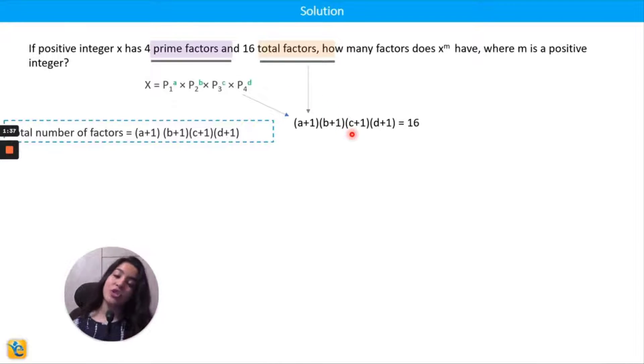So it's a product of four numbers which is 16. Now there are multiple ways of doing this - there is 2×2×2×2, or you could take three ones and a 16, you could take two ones and a two and an eight. So there are many ways. However, I am taking just this 2×2×2×2.